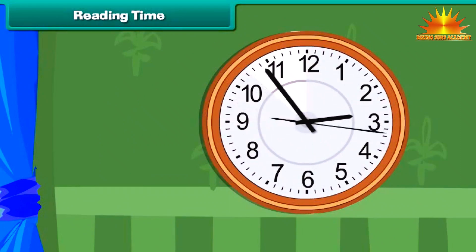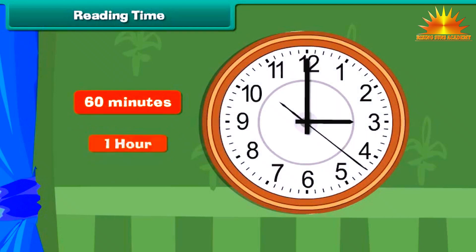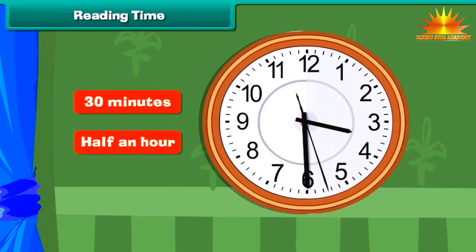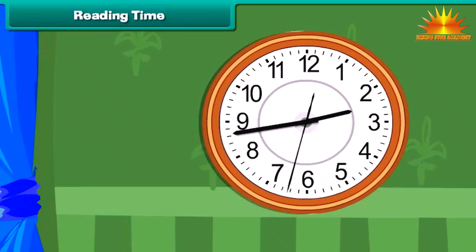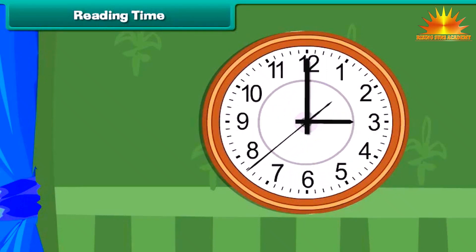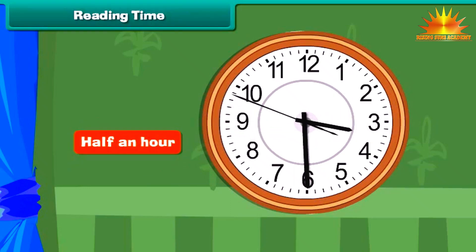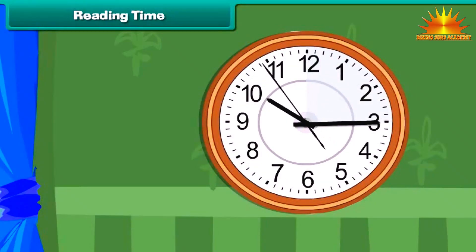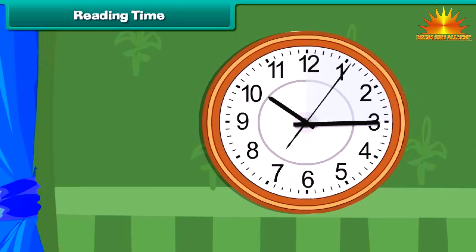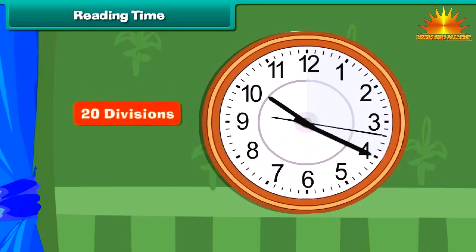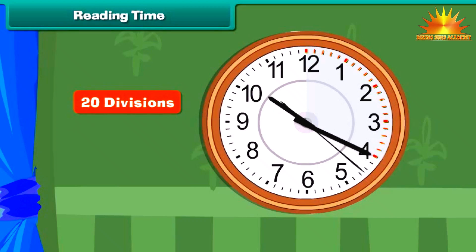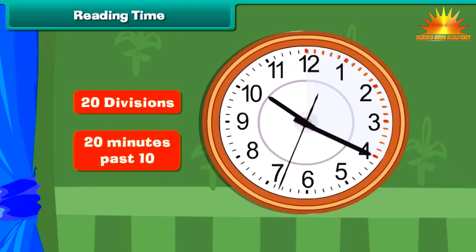We just learned that there are 60 minutes in one hour, which means there are 30 minutes in half an hour. An hour is completed when the minute hand completes one full circle from 12 to 12. When it completes half a circle from 12 to 6, half an hour is completed. When the minute hand is between 12 and 6, the time is read as so many minutes past the hour. For example, suppose the hour hand is at 10 and the minute hand is at 4. Between 12 and 4 there are 20 divisions, meaning 20 minutes are completed after 10 o'clock. This time is read as 20 minutes past 10.